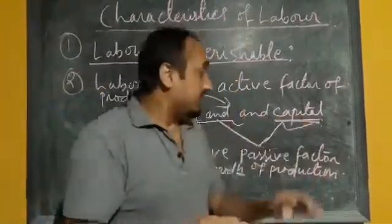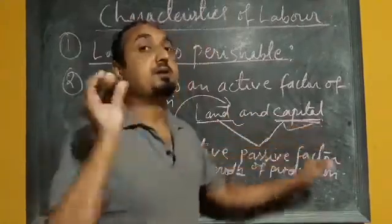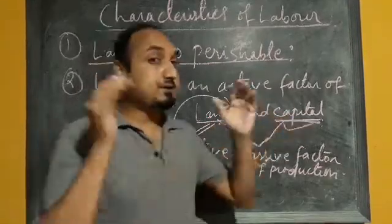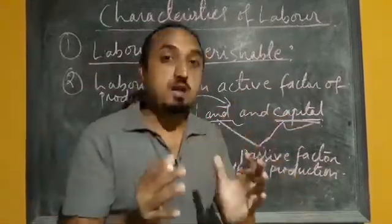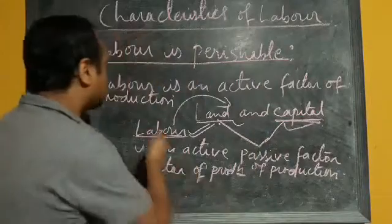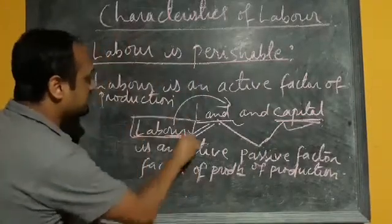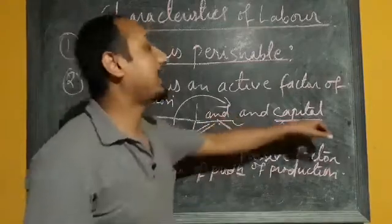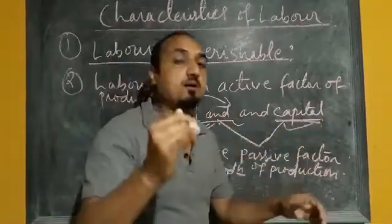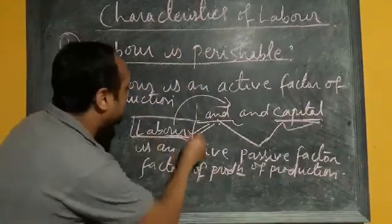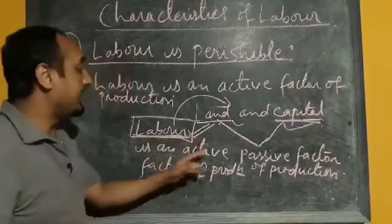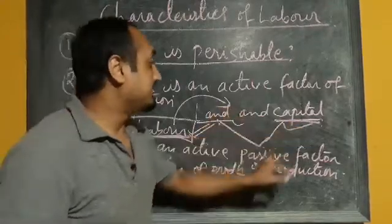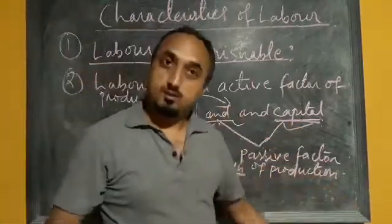In order to produce anything, land and capital need the support of labour. Labour is an active factor because in order to operate land and capital, at least one labour is needed. That's why labour is an active factor of production and land and capital are called passive factors of production.